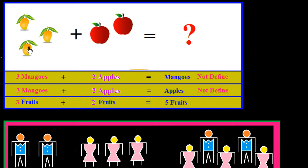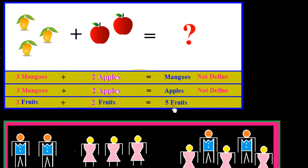But if we say we have three fruits here and two fruits here, then how many fruits do we have? We could easily reply: we have five fruits total. In this way, if the units are the same we can add them up; if the units are not the same we cannot add them up.